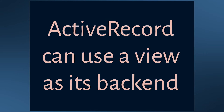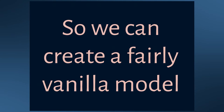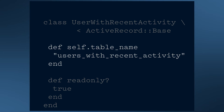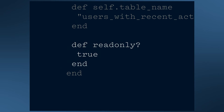In fact, it's so similar that Active Record can use a view as a back end for a model. We can create a fairly vanilla model and interact with it as if it were a table. We've got this UsersWithRecentActivities model — it's an Active Record subclass. We give it a table name because our naming didn't match what Rails would expect from the class name. And we tell it it's read-only. This isn't strictly true, but it's easiest to assume a view is read-only. It tells Rails that nothing can be deleted or written into this table.